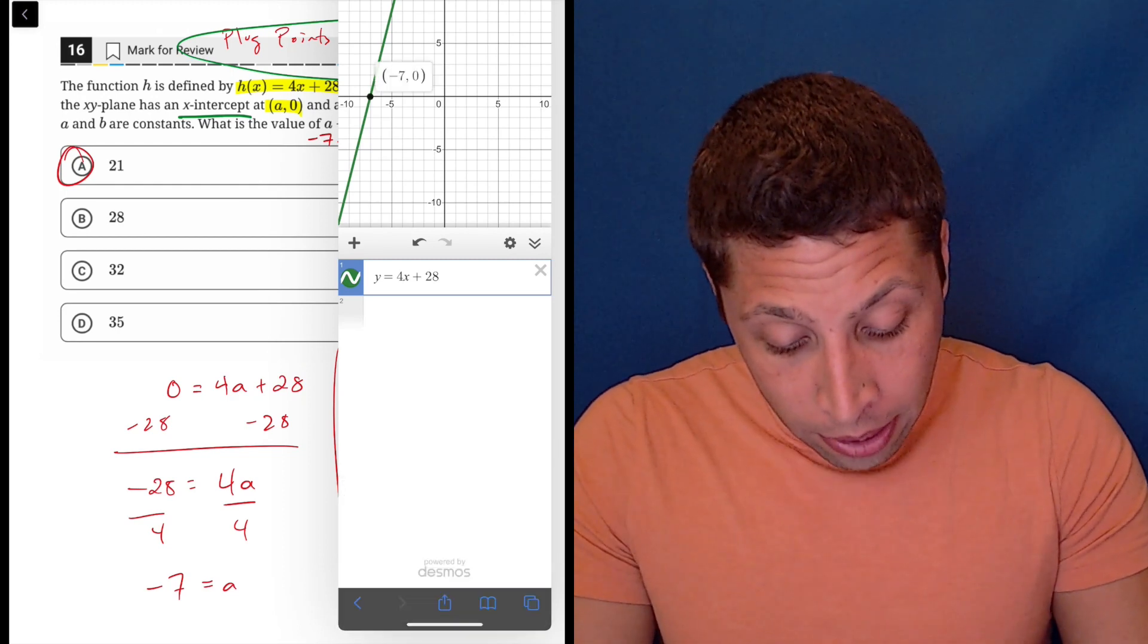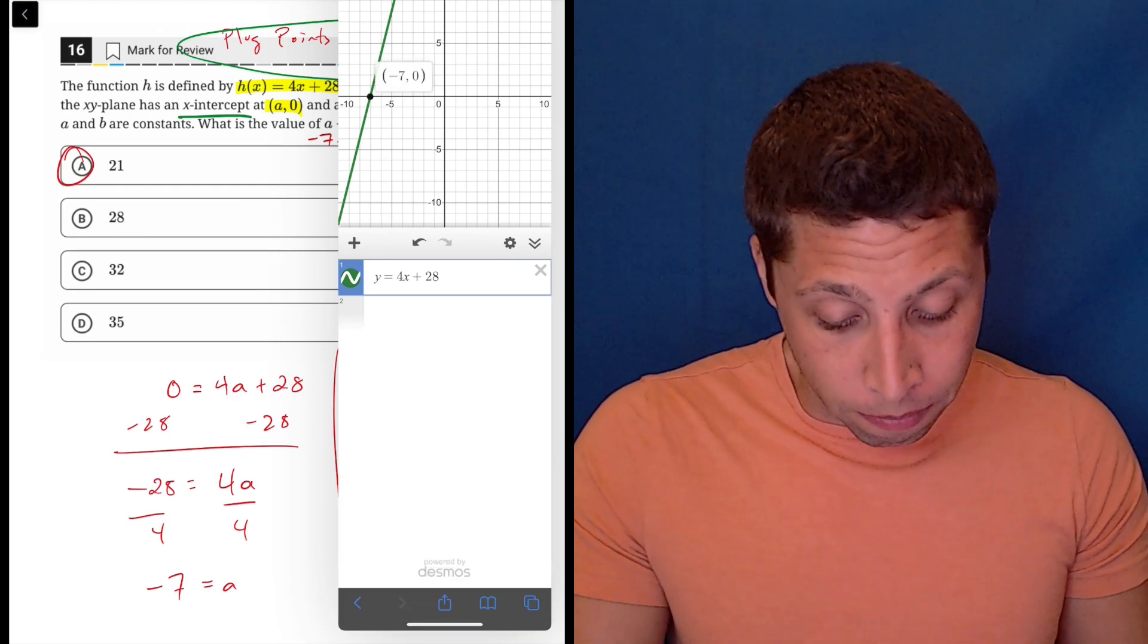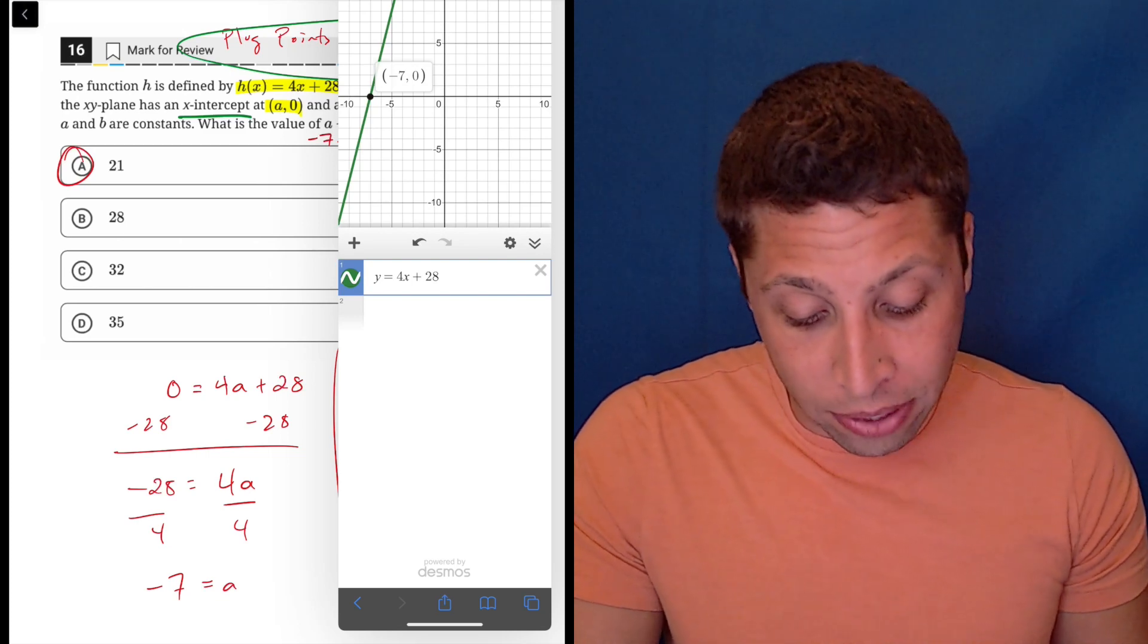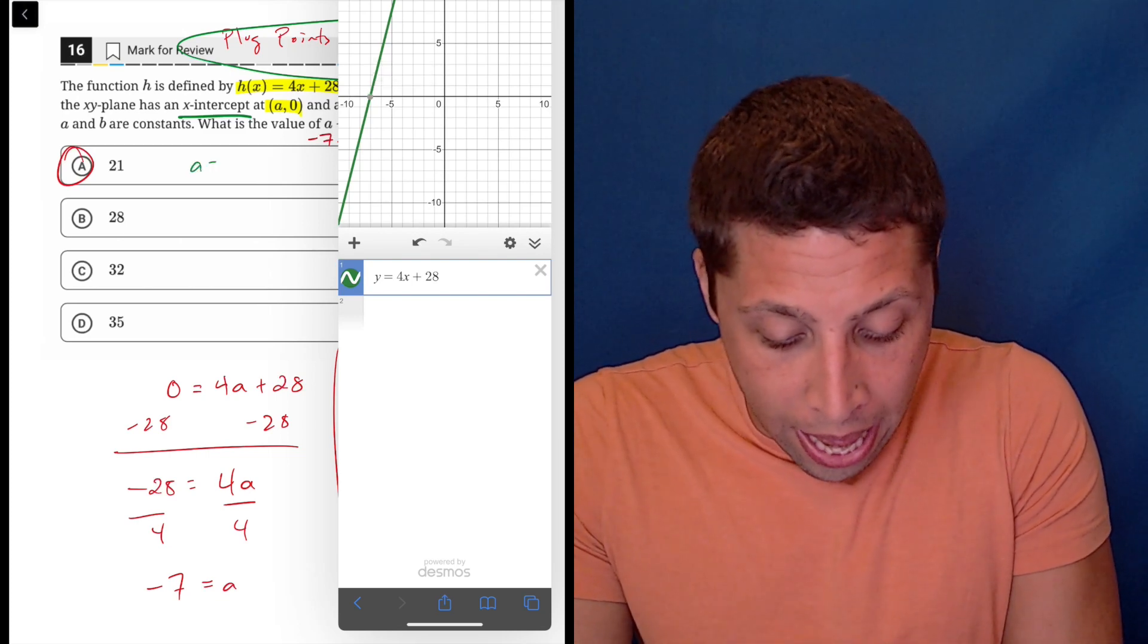And now I can see there's my x intercept. It just appears in the normal piece here. So that's the negative 7, 0. So that's the a being negative 7.